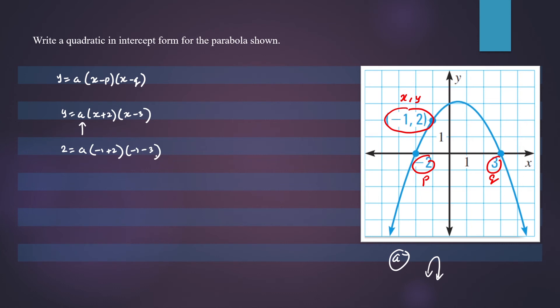And now we can calculate a. So we have 2 equals a times 1, times negative 1 minus 3 is negative 4. So 2 equals negative 4a. So a would be equal to negative 1 half.